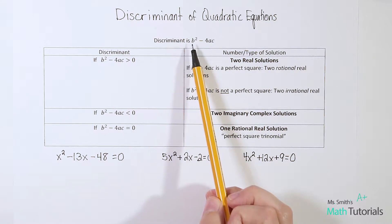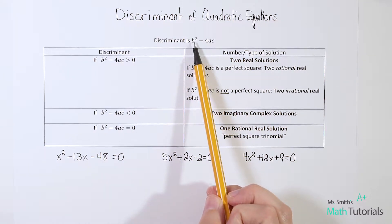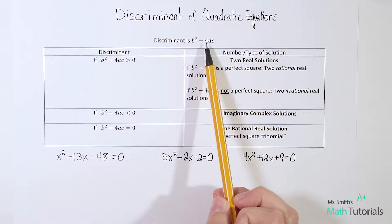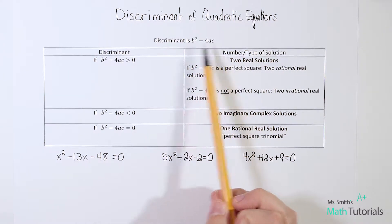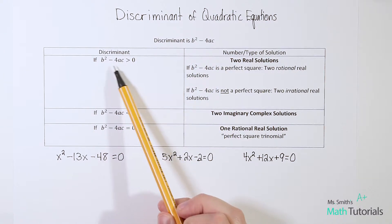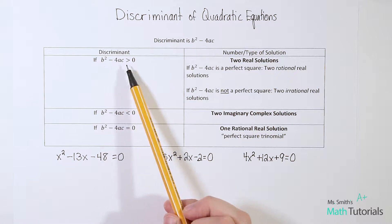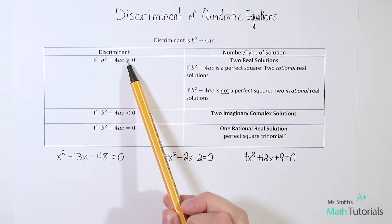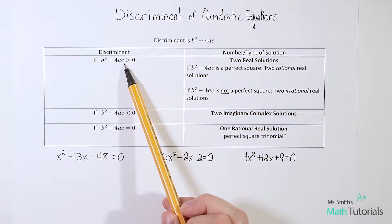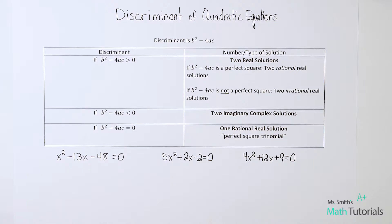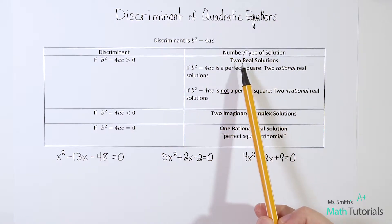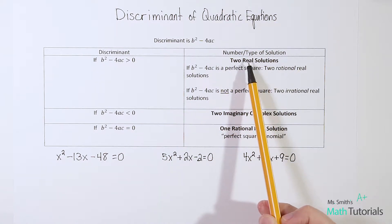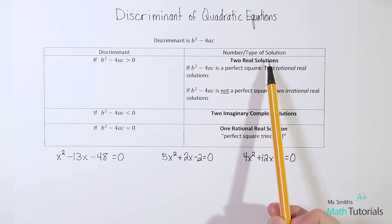If you put in b squared minus four times a times c, solve it, and you get a number that is greater than zero, that means you would have two real solutions.